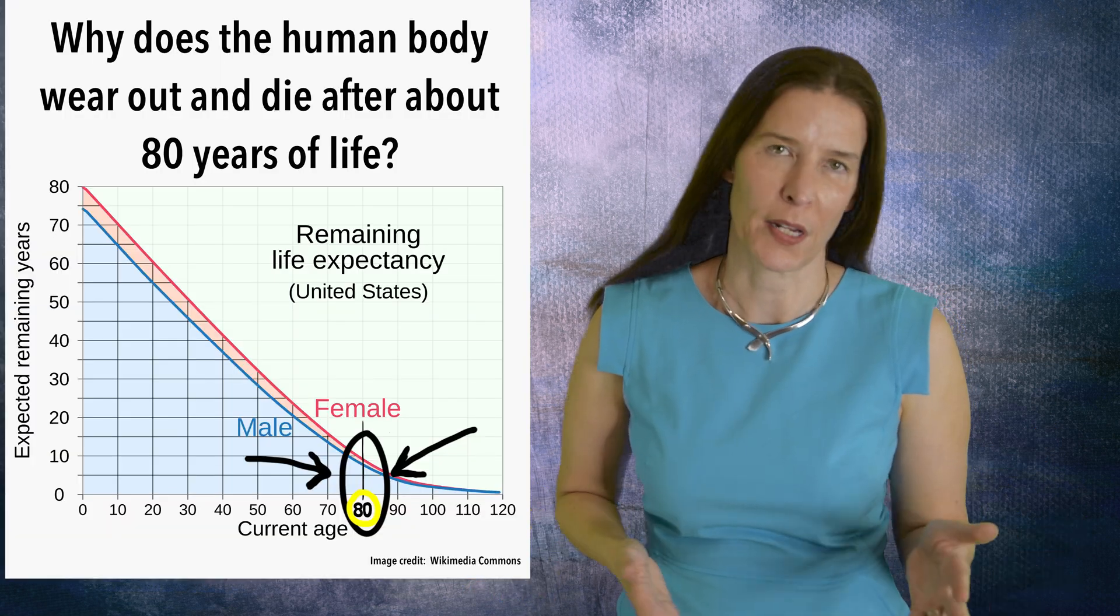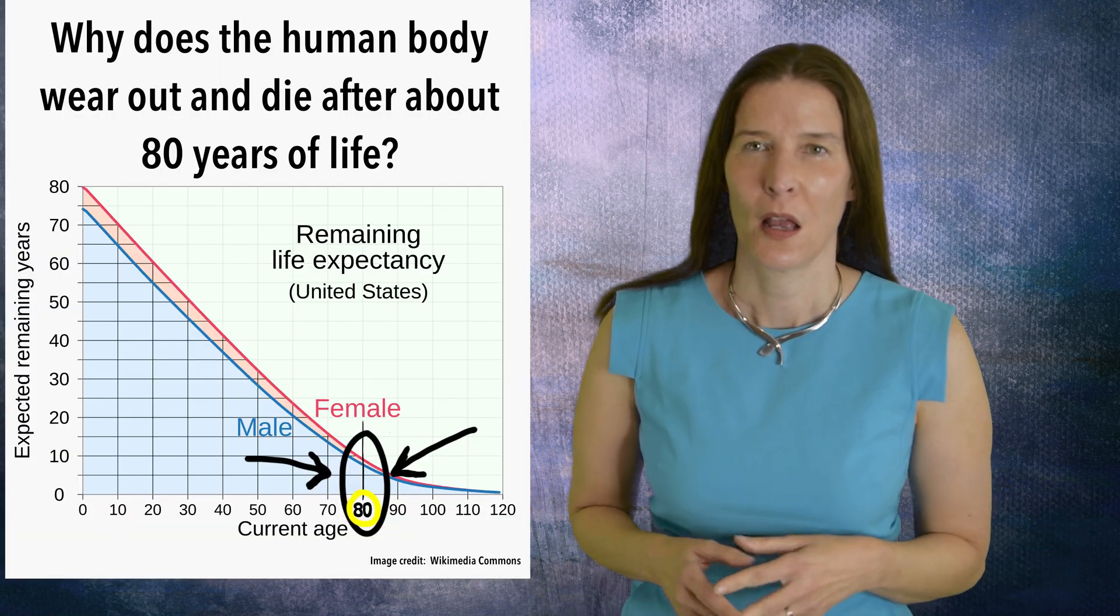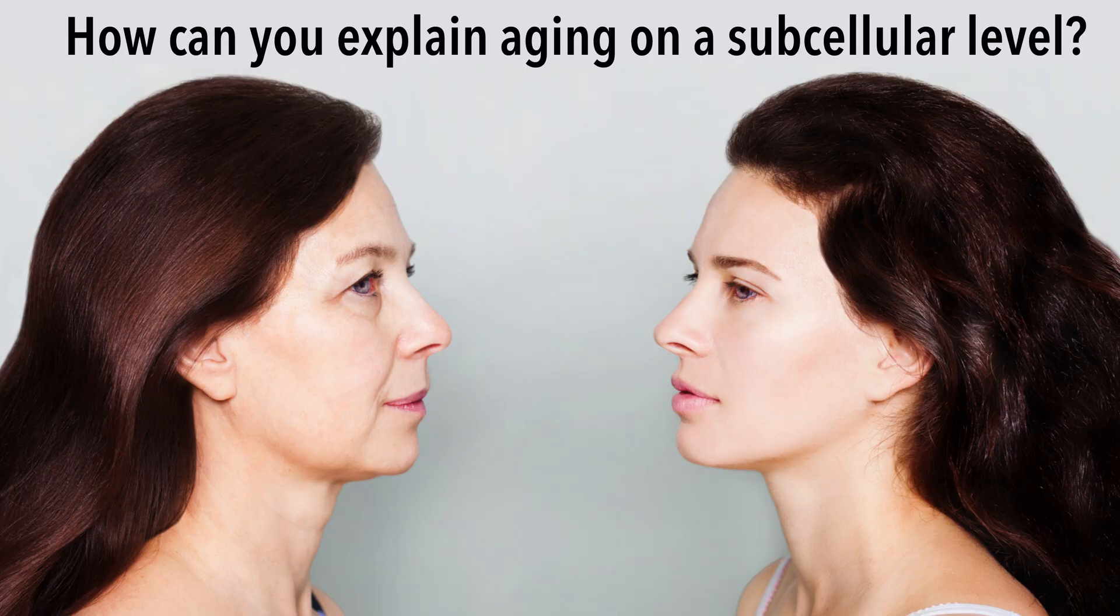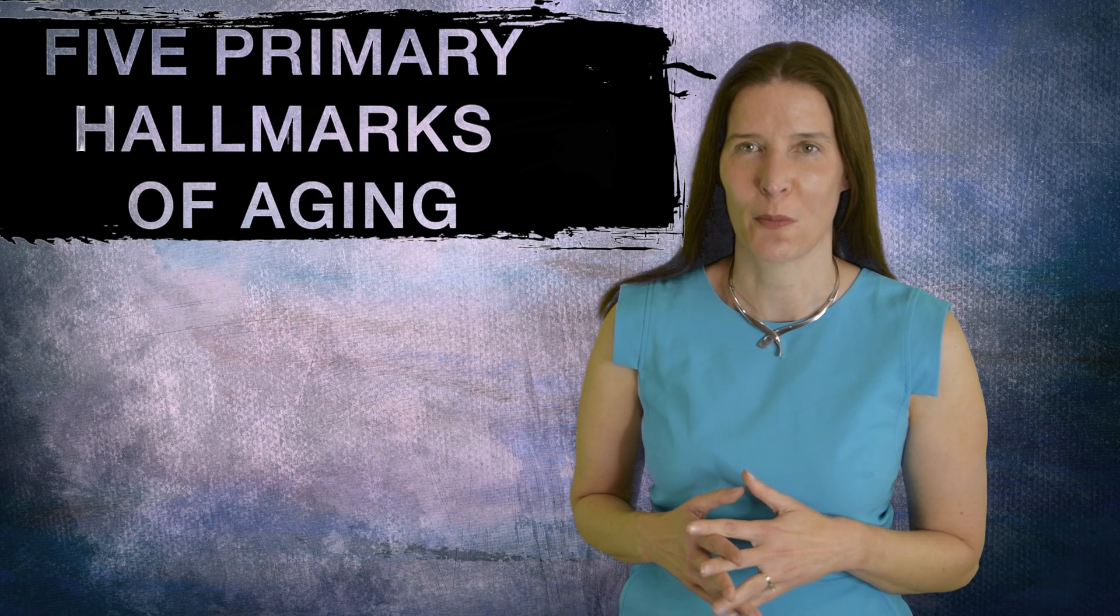Why does a human body wear out and die after about 80 years of life? How can we explain aging on a subcellular level? The answer is in the five primary hallmarks of aging.